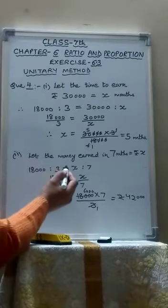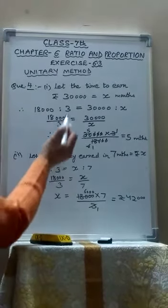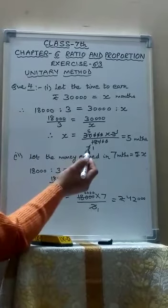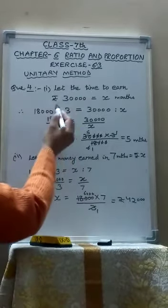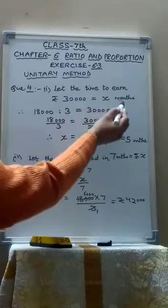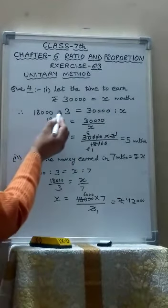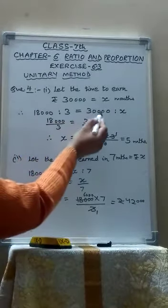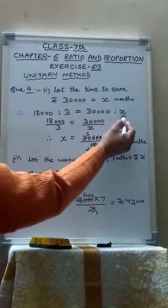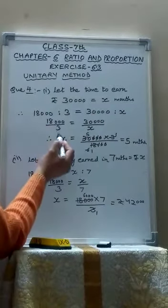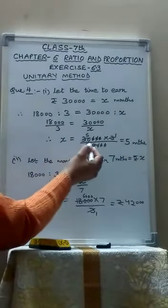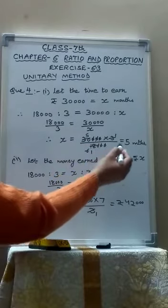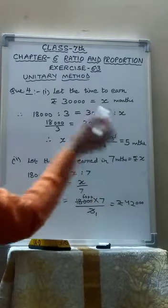Question number 4 is a man earns rupees 18,000 in 3 months. How much time would he take to earn rupees 30,000? Let the time to earn rupees 30,000 be X months. That means 18,000 ratio 3 equals to 30,000 ratio X. So 18,000 upon 3 equals to 30,000 upon X. Cross multiply, so X becomes 30,000 into 3 upon 18,000 which equals to 5 months.